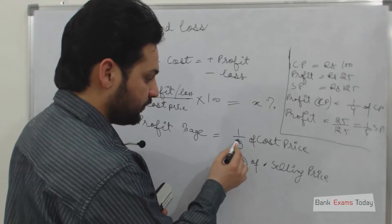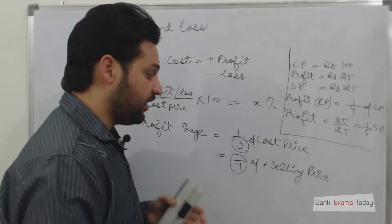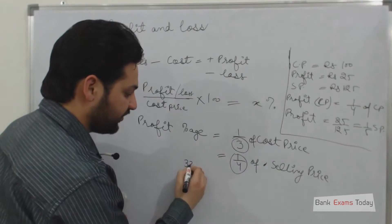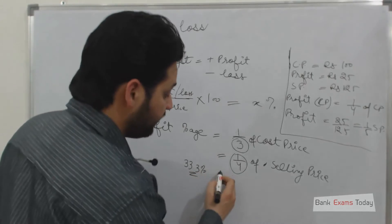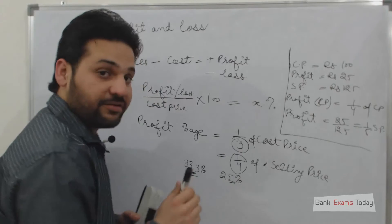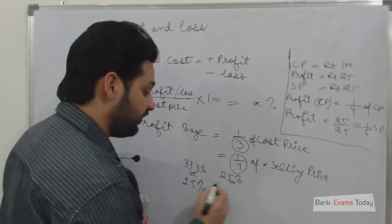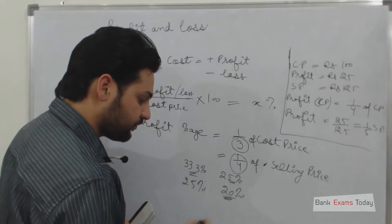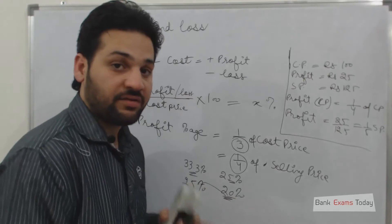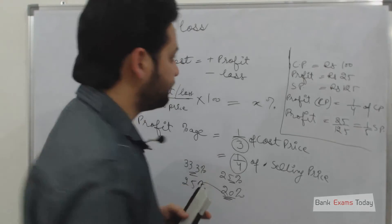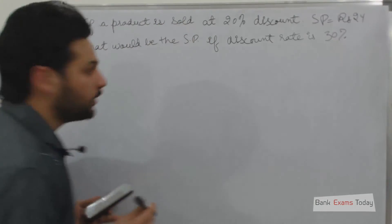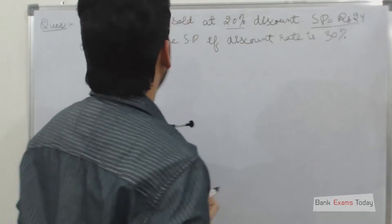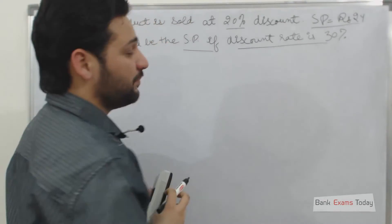In case of profit, add one to the denominator; in case of loss, deduct one. So if profit percentage is 33.33% of cost price it will be 25% of sales price. If it is 25% of cost price it will be 20% of sales price. In case of loss, if it is 20% of selling price it will be 25% of cost price. Now a very simple question: if a product is sold at 20% discount and its selling price is 24 rupees, what would be the selling price if discount rate is 30%?